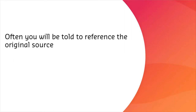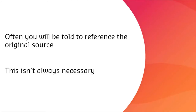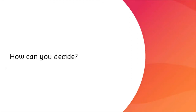Often your lecturers will tell you that you should always reference the primary source or the original source of the information, and this is true in some instances. In others, you may end up tracking the evolution of a theory back through time, which isn't really necessary. So how can you decide? Let's have a look at a couple of examples.